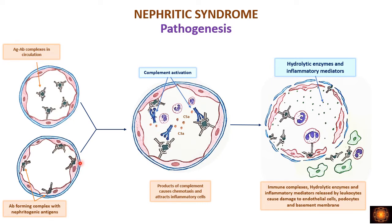The other mechanism involves antigens present within the glomerular capillary wall itself — we call these nephritogenic antigens. Antibodies are formed against these antigens and come directly to attack the nephritogenic antigens present in the glomerular capillaries. So here also we have formation of antigen-antibody complexes. Whether the complexes are formed elsewhere and deposited, or formed within the capillary walls, the result is deposition of antigen-antibody complexes.